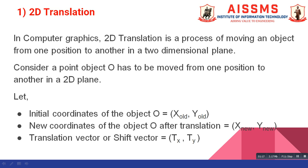Consider a point object O has to be moved from one position to another in 2D plane. In order to do this operation we assume the initial coordinates of object O as X old comma Y old and new coordinates of object O after translation as X new comma Y new. And translation vector or shift vector as TX comma TY.